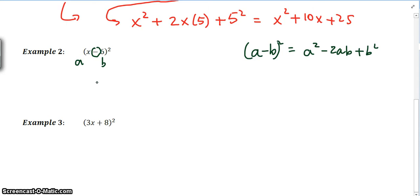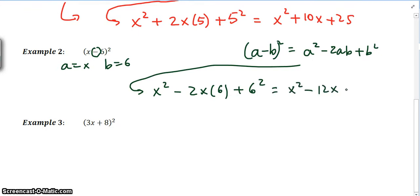What we end up having is our a value is x and our b value is 6. So a equals x and b equals 6. So a is x squared minus 2 times whatever a is, so that a is x, times that with 6 plus 6 squared. That's the same as saying x squared minus 12x plus 36.